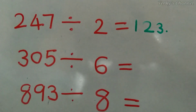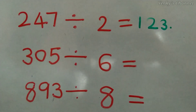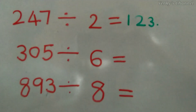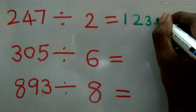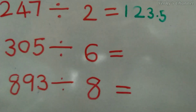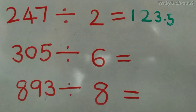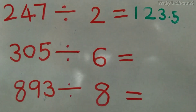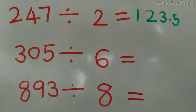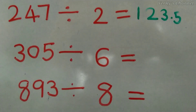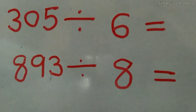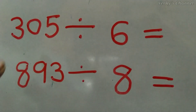2 × 3 = 6 and we have a remainder of 1, so we keep a decimal point. With remainder 1, we put a 0 beside it and it becomes 10. 2 × 5 = 10, no remainder — so this is the final answer. The answer, also known as the quotient, is 123.5.